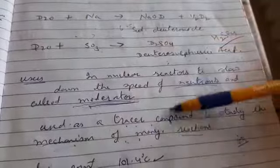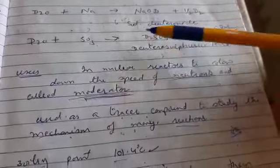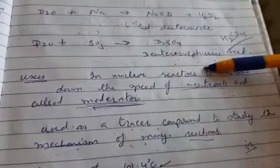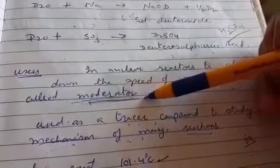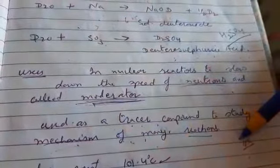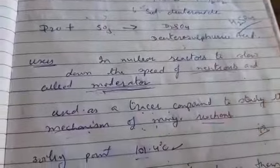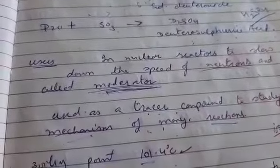Chemically it's the same as H2O, but it is used in nuclear reactions to trace out the mechanism of reactions and to slow down the speed of neutrons, acting as a moderator. So that's all about heavy water. In the next session we will start the next chapter. Thank you.